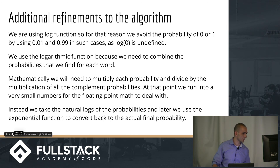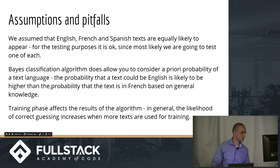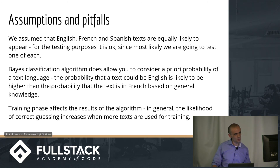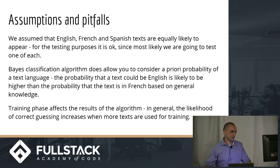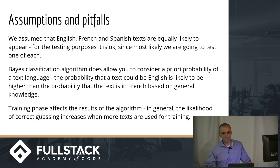The assumption of one-third probability for each language works in our case because we're testing all three equally. However, you could use a prior probability — for example, English is statistically more common globally than one-third, and that would affect the final calculation. More training text also improves accuracy.